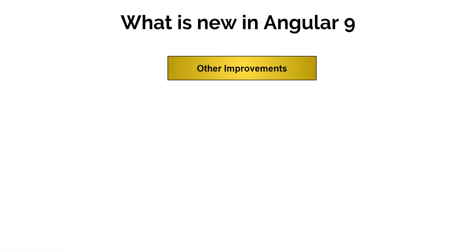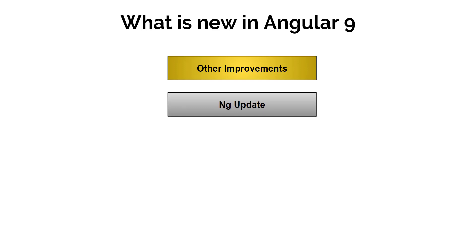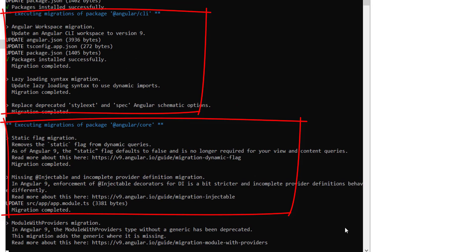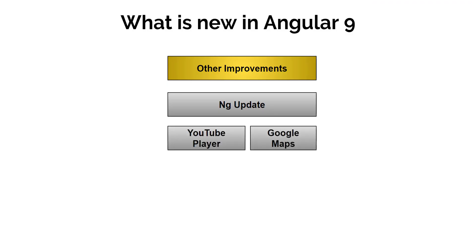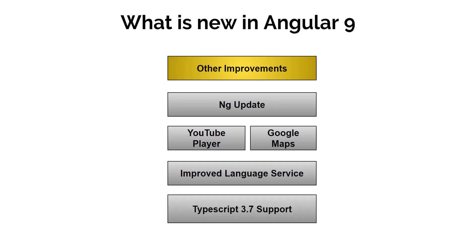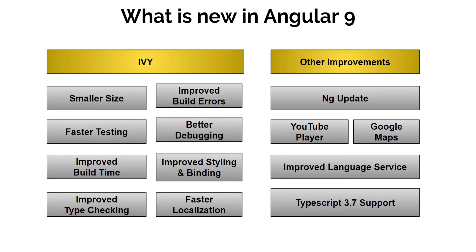There are also other improvements. NG update now does more to tell you what is going on under the hood — for each migration you will see information about the migration. YouTube Player and Google Maps components have been added in Angular 9. Angular 9 has also improved the Angular Language Service extension, which we will look at in our next video. And Angular 9 is also updated to work with TypeScript 3.7. So these are all the major changes and improvements in Angular 9.